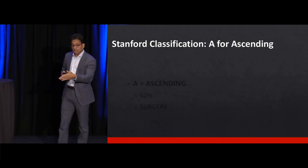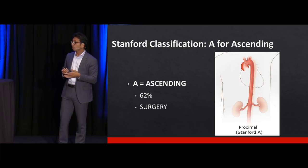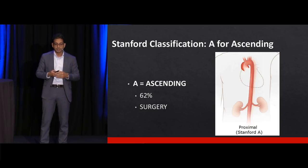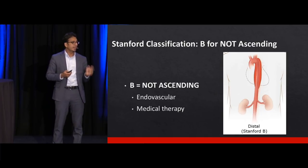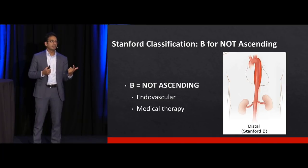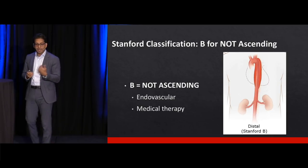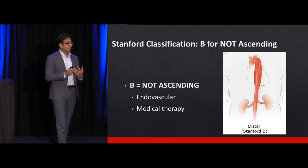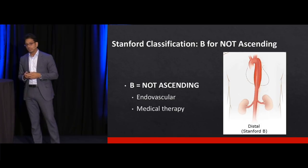The classification scheme: A for ascending. 62% of dissection cases are ascending — starting proximal to the arch and coming down toward the heart. These require surgery — it's a surgical diagnosis for CT surgery. B means not ascending; I'm very specific about that. If someone is both ascending and descending, it's type A. B specifically means not proximal to the arch, and that requires medical therapy and possibly endovascular therapy — not necessarily open surgery, but vascular surgery may stent it or fenestrate the false lumen to drain blood back into the true lumen.